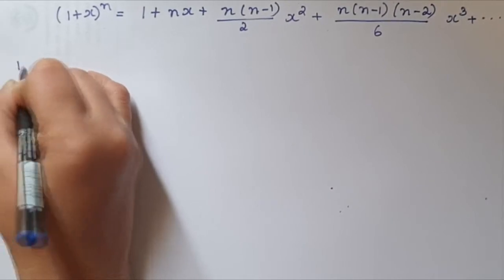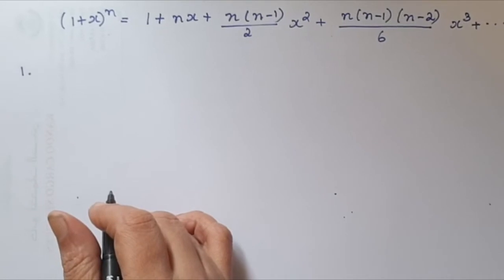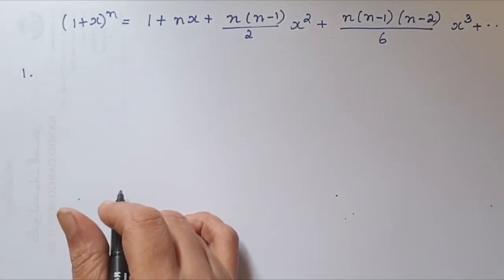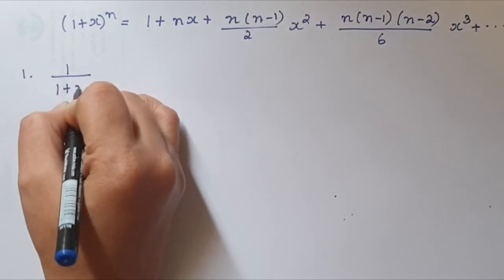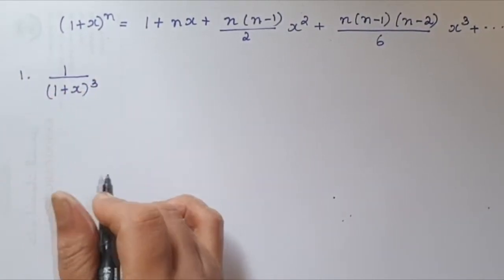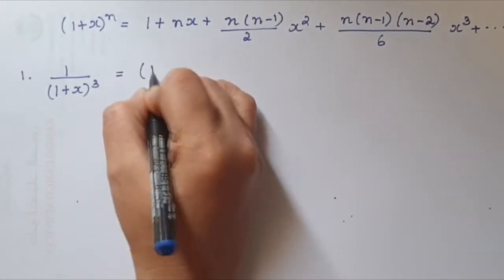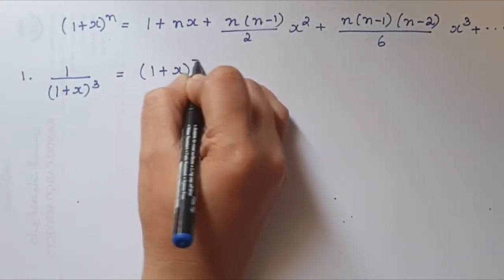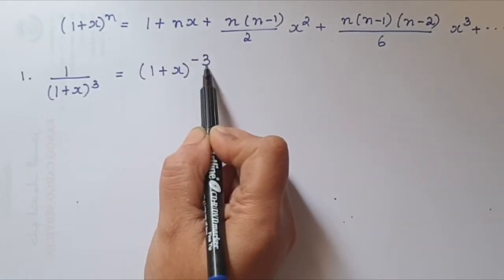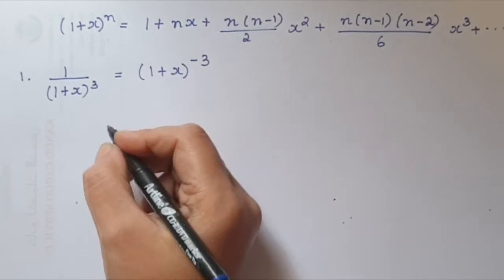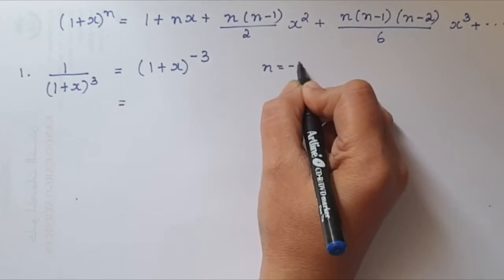First question: work out the first three terms of the expansion 1/(1 + x)³. This can be written as (1 + x)⁻³. The first term is 1, and the power is negative, so we can apply this expansion. The value of n here is −3.